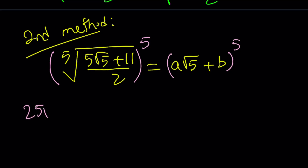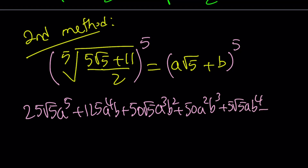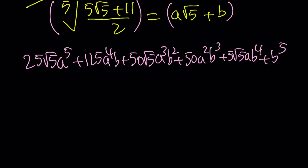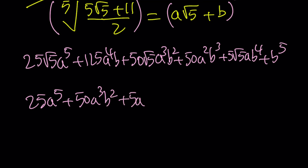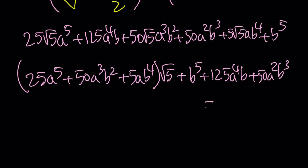The right-hand side using the binomial theorem gives us 25√5·a⁵ + 125a⁴b, plus 50a²b³, and so on - one term is irrational, the next is rational, alternating. We rearrange and group the terms with √5 together and the rational terms together. Then we compare to the left-hand side, which is (5√5 + 11)/2, or equivalently (5/2)√5 + 11/2.